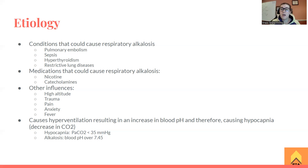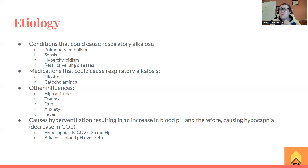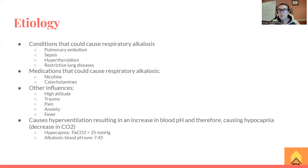Think about it: when you breathe really, really fast, what's happening is you're clearing out all that CO2 from your body. So we're going to have a decrease in the partial pressure of CO2. When we have that decrease, there's less CO2 floating around the blood bonding with hydrogen ions to create carbonic acid. There's less carbonic acid in the blood now because we're clearing out all that CO2, so the ions become more alkaline.